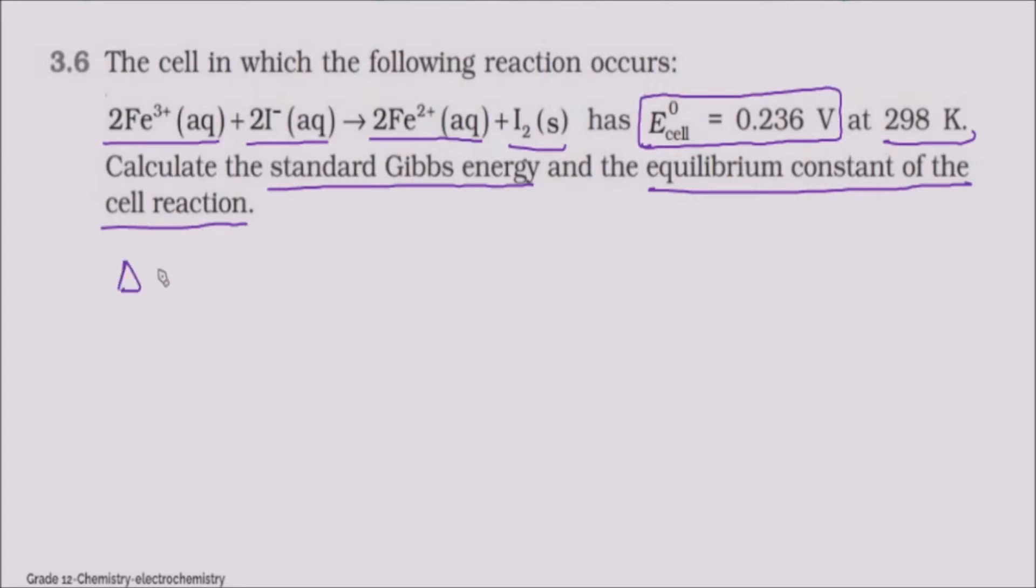So the first thing is delta G° is equal to minus nF E°cell.